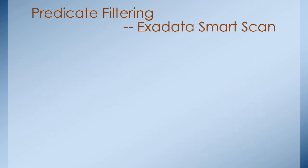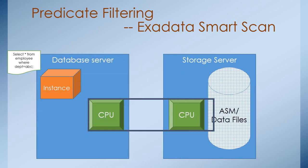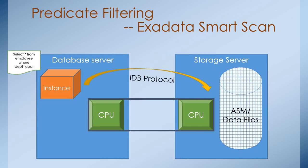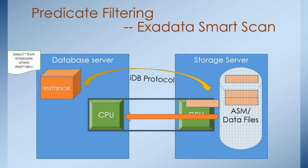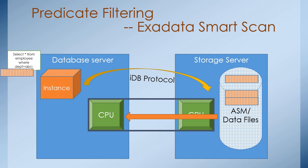In Exadata using smart scan, the SELECT statement is directly forwarded to the database storage server through the IDP protocol. The storage server identifies which 1 million records are requested by the end user and pulls data only for those 1 million records back to the database instance. The database instance does not need to perform any filtration and gives the output directly to the end user.